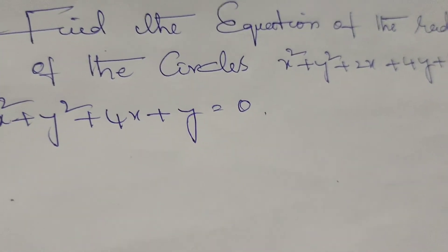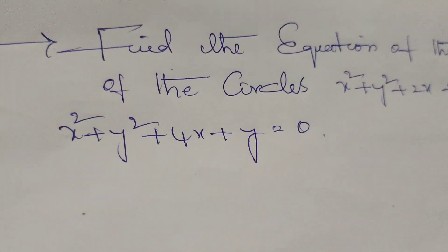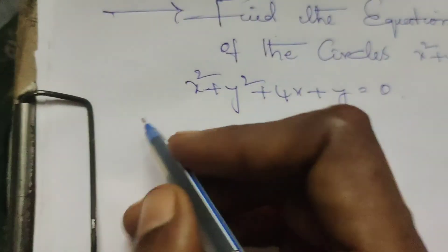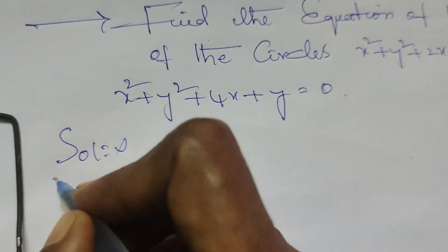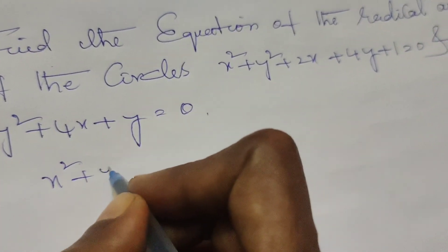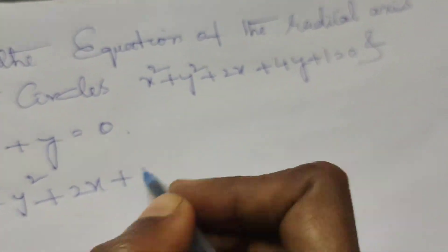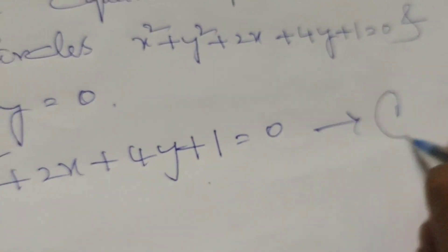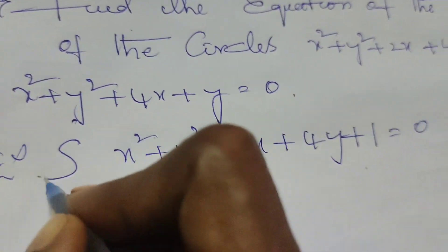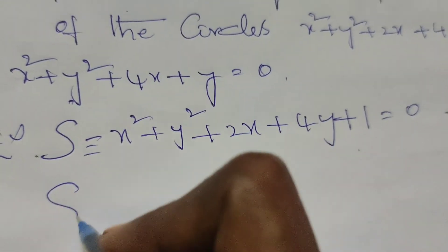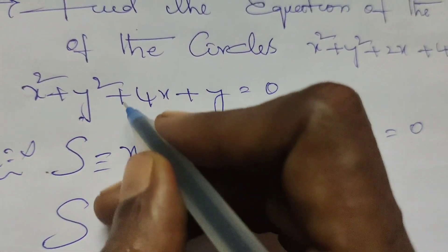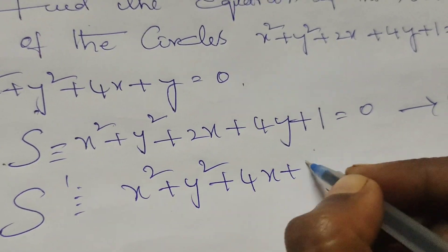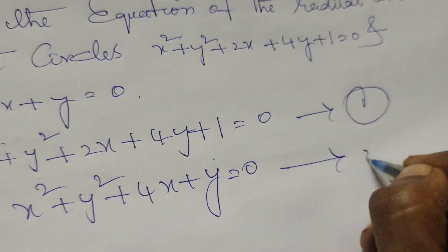First of all, the equation of the radical axis of the given two circles means S minus S dash equals to 0. Here the given two circles are: the first one is x² + y² + 2x + 4y + 1 = 0, this is equation number 1, assume circle S. Next, assume circle S dash, that is x² + y² + 4x + y = 0, this is the second equation.